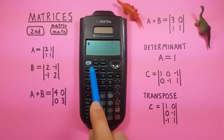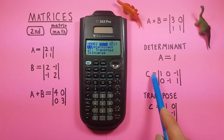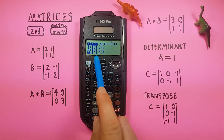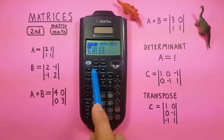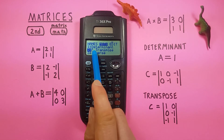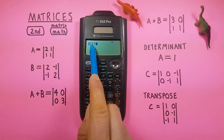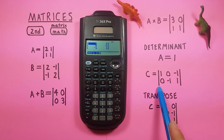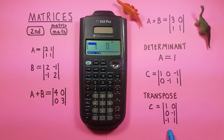Quit out of the edit screen back to matrix mode. To find the transpose of matrix C, first highlight C and press enter to place it on screen. Go back to the matrix menu, scroll over to the math tab, and scroll down to number two which is T-transpose. Press enter — you'll see a T after the C, indicating we want the transpose of matrix C. Press enter again and the result shows our C matrix, which was two rows by three columns, has become three rows by two columns — correctly transposed.